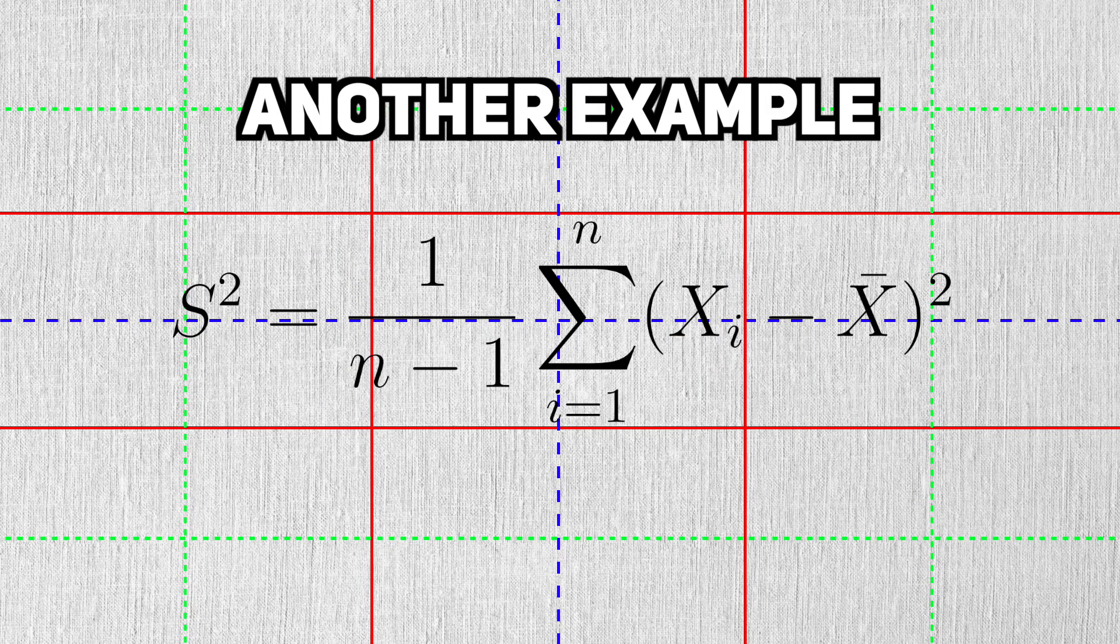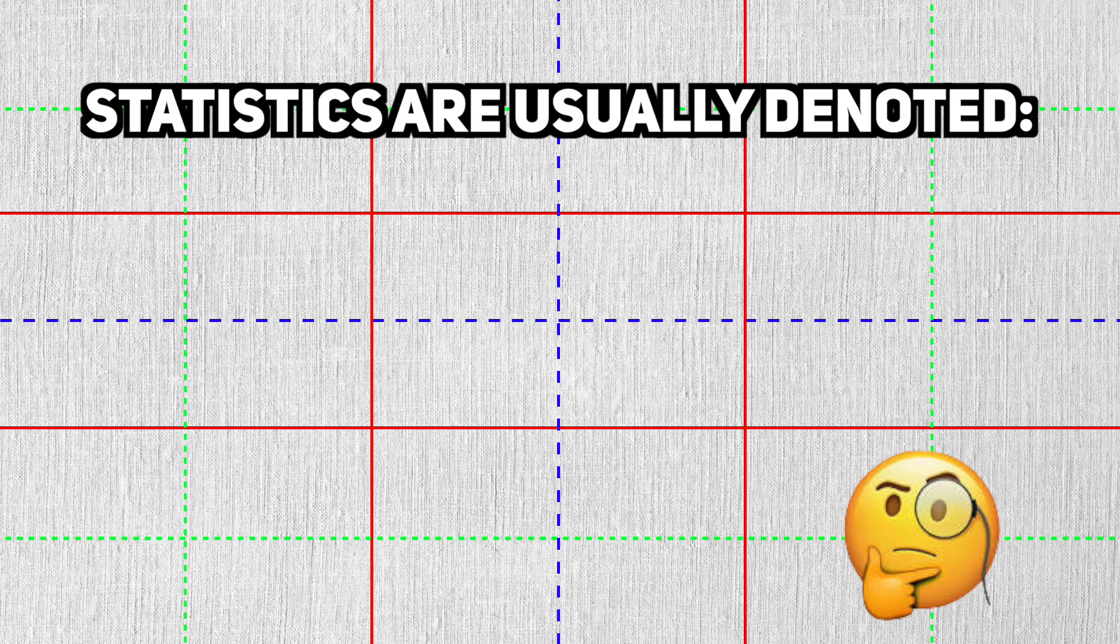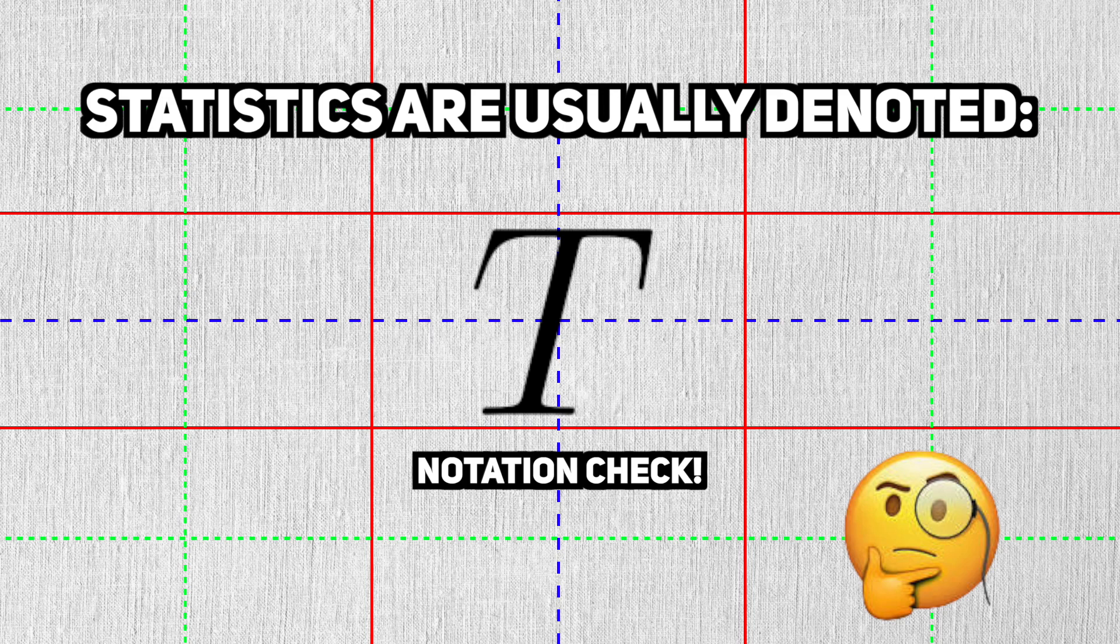Another well-known statistic is the sample variance. For some reason, statistics are usually denoted by the letter T. Notice that it's a capital letter.